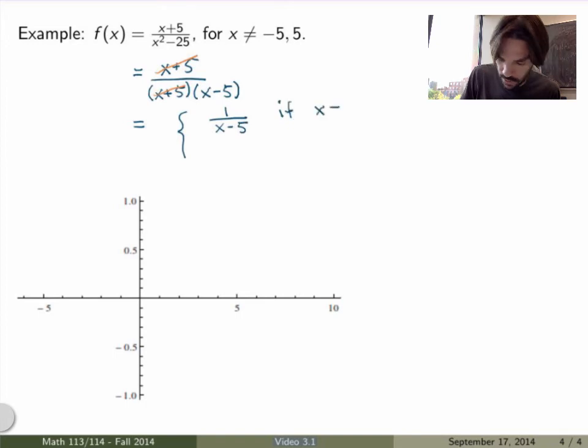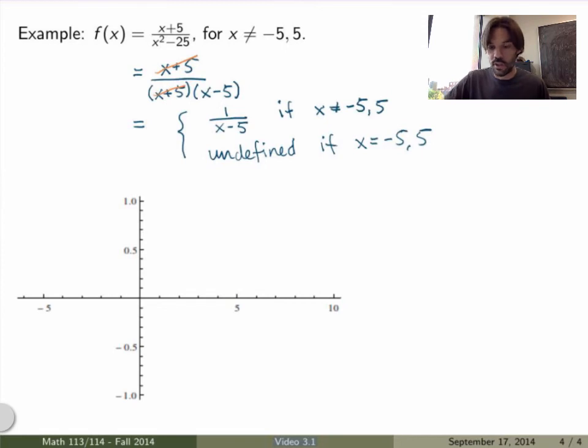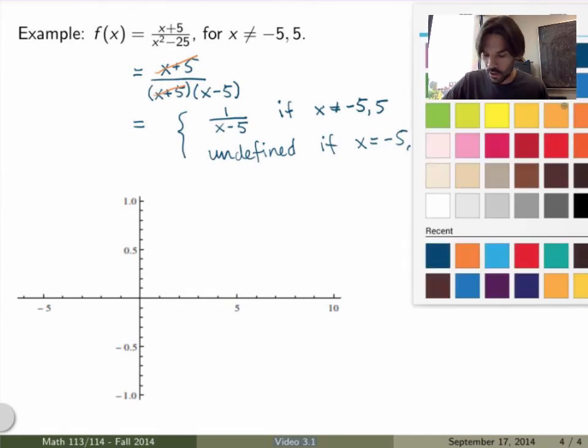If x is not equal to minus 5 and 5. Now I need to say that explicitly because now this would be defined at x equals minus 5 if I didn't say it explicitly, so it would be different. And it's undefined if x is equal to minus 5 or 5. So this is the exact same function just written in a different way.